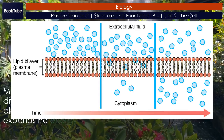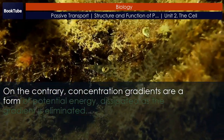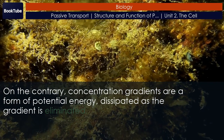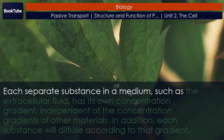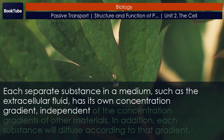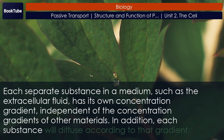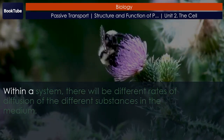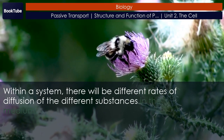Diffusion expends no energy. On the contrary, concentration gradients are a form of potential energy dissipated as the gradient is eliminated. Each separate substance in a medium, such as the extracellular fluid, has its own concentration gradient, independent of the concentration gradients of other materials. In addition, each substance will diffuse according to that gradient. Within a system, there will be different rates of diffusion of the different substances in the medium.